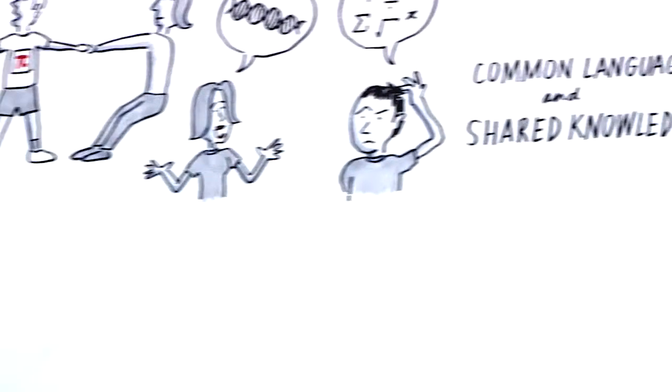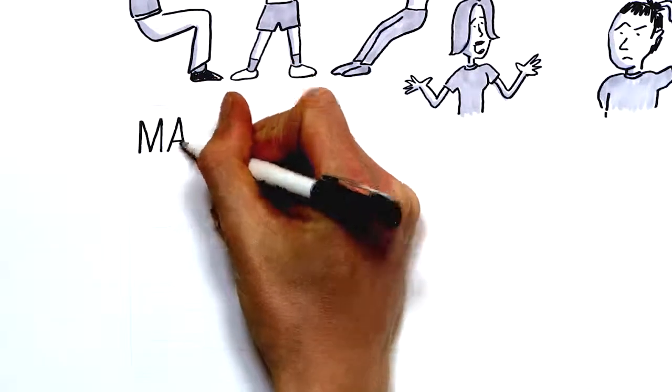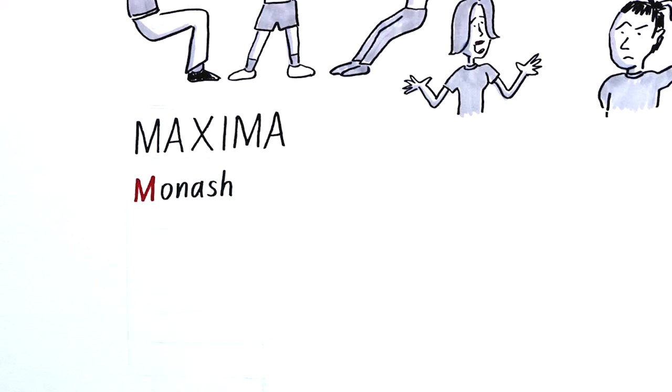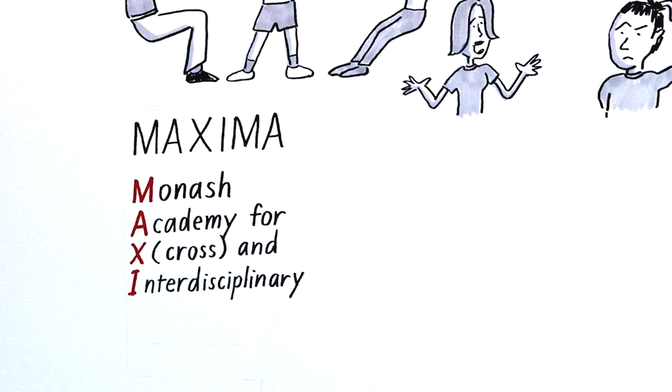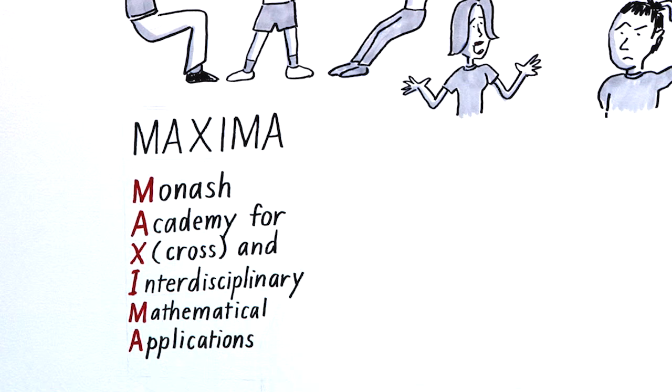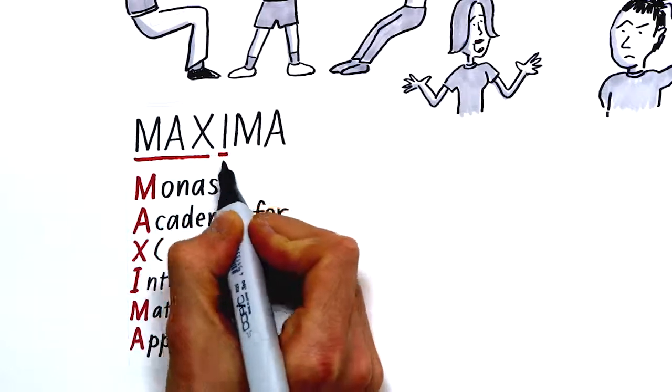At Monash University, we like to tackle big challenges. That's why we've established Maxima, the Monash Academy for Cross and Interdisciplinary Mathematical Applications. It's about maximising impact through mathematics.